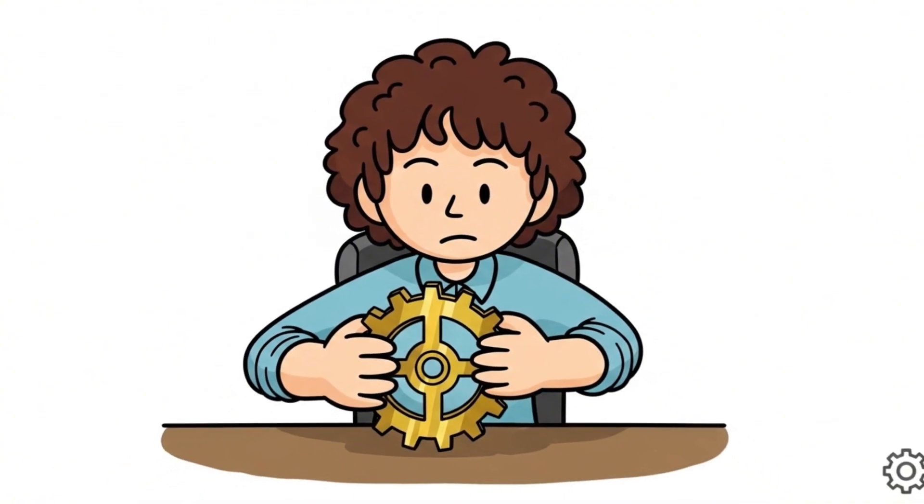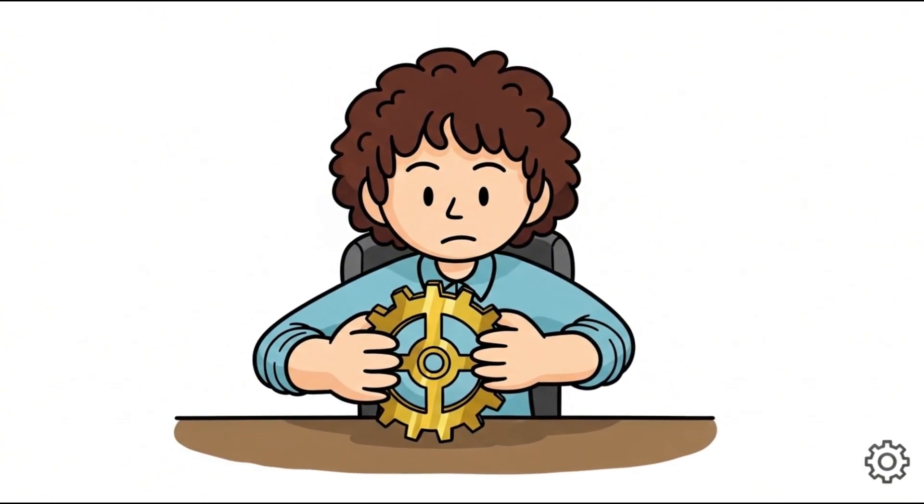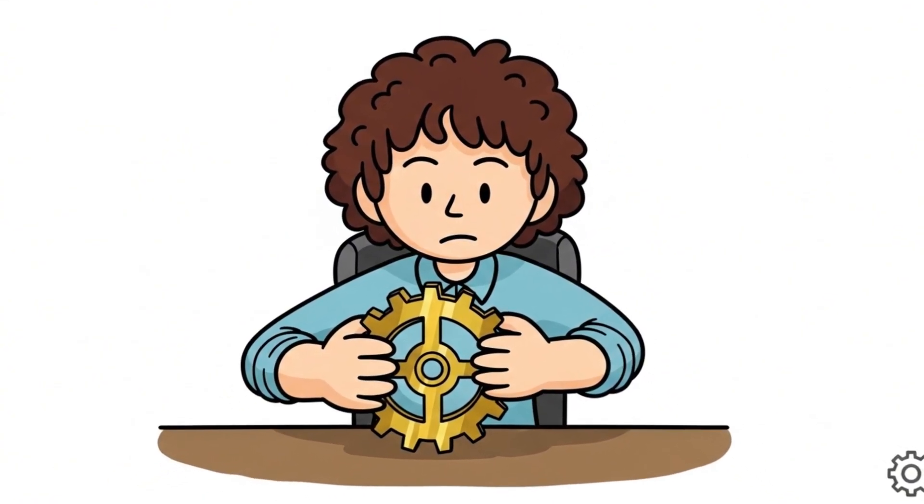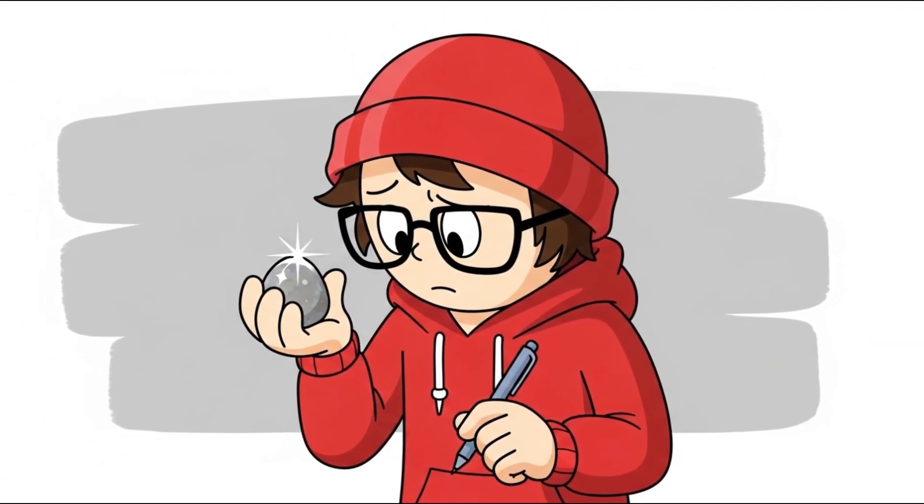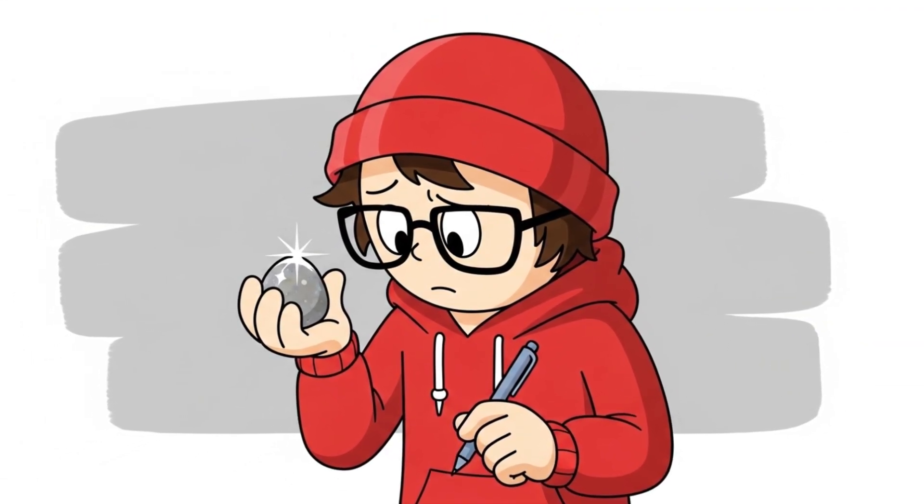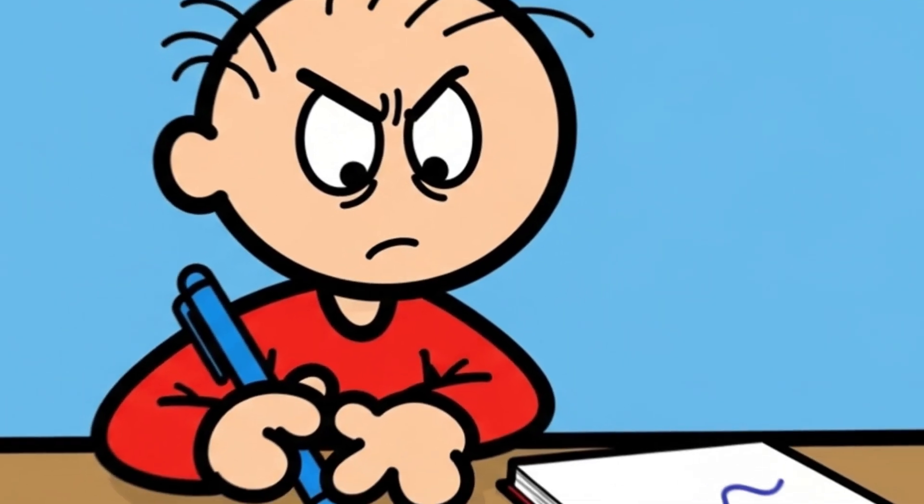Number 4. The Object Fidget Phenomenon. Before fidget spinners became a playground fad, a surprising number of innovators kept a thinking object within reach, something small they could roll, tap, or twist during deep work.